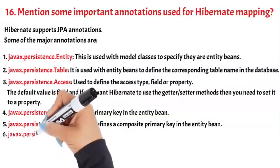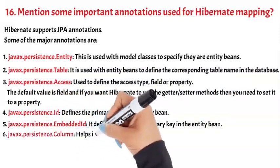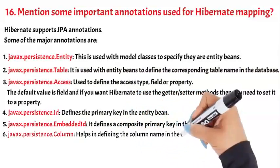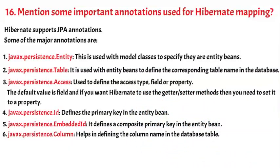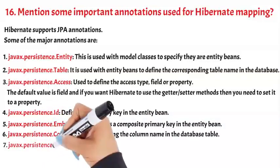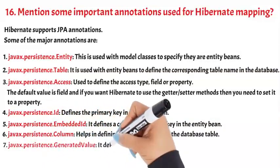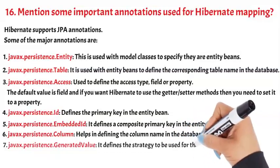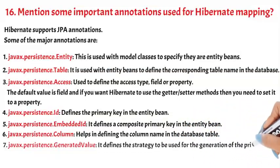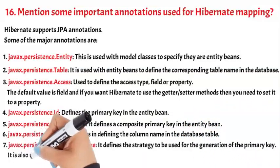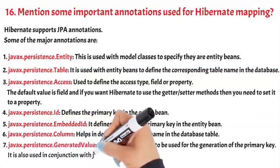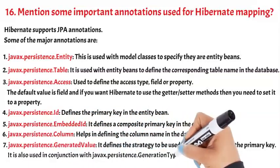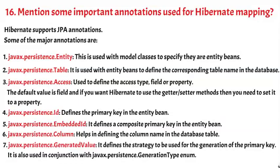7) javax.persistence.GeneratedValue — defines the strategy to be used for generation of the primary key. It is used in conjunction with javax.persistence.GenerationType enum. This is the end of our Hibernate interview questions. We hope you enjoyed learning with YQ Academy. Until next time, goodbye.